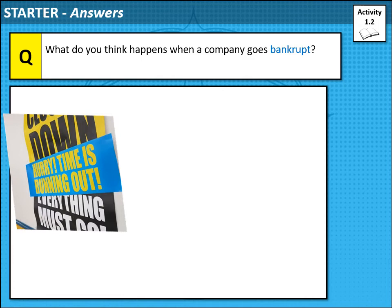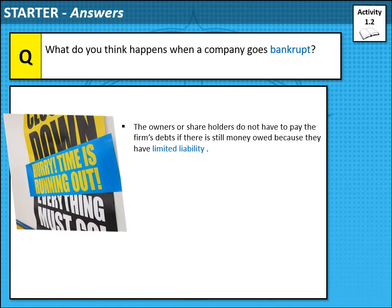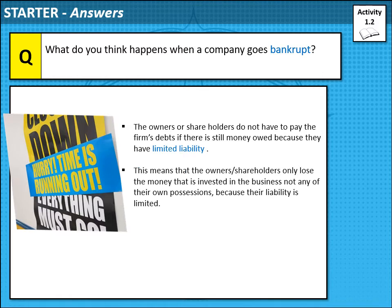So what happens when a company goes bankrupt? The owner or shareholders do not have to pay the firm's debt if there is still money owed, because they have limited liability — if they are a private limited company. That means they will only lose the money they put in in the first place. For instance, if someone started a new business and put in £10,000, and asked two or three friends to each put in £10,000, they will only lose that £10,000 each. So even if the company owes £100,000, they will only be liable for the £10,000.